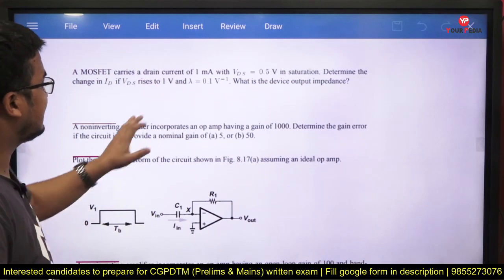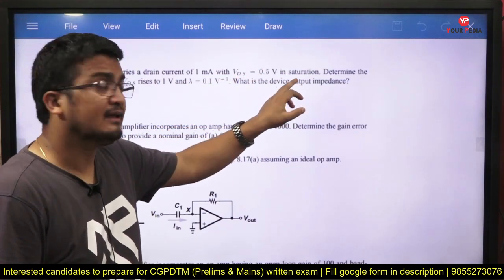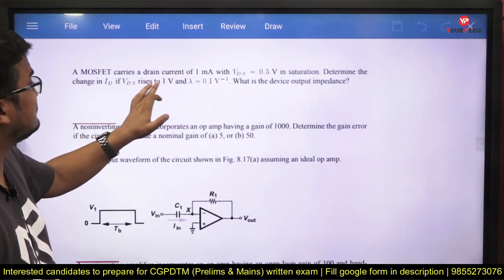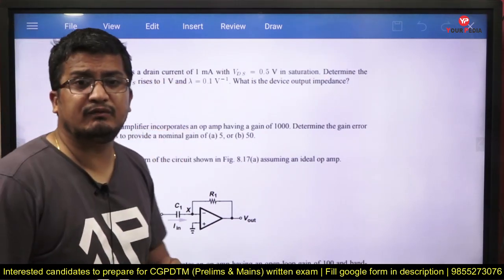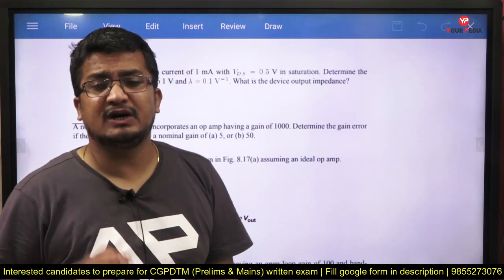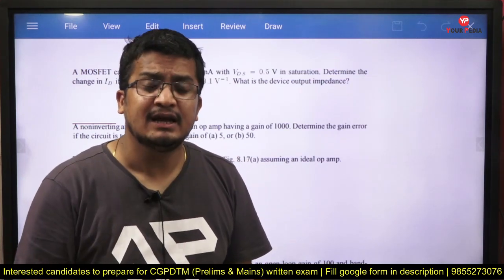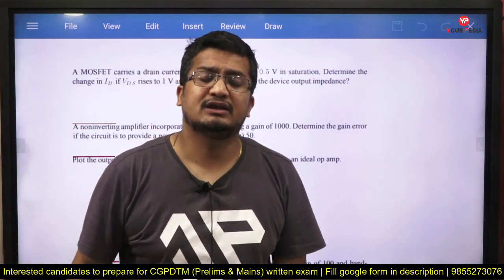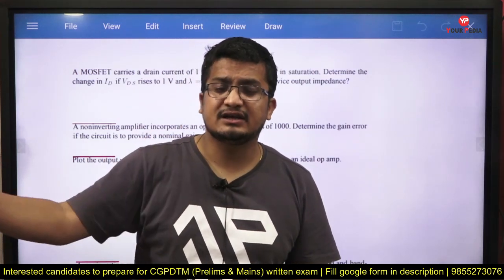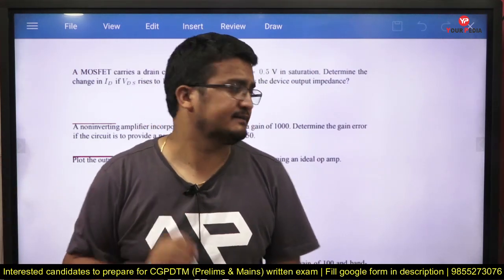Next: a MOSFET carries a drain current of 1 milliampere with VDS equal to 0.5 V in saturation. Determine the change in ID if VDS rises to 1 V, with lambda equal to 0.1 V⁻¹. Wherever lambda is mentioned — whether in BJT or MOSFET — you need to consider the finite output resistance concept. Channel length modulation in MOSFET and base-width modulation in BJT are the relevant effects here.